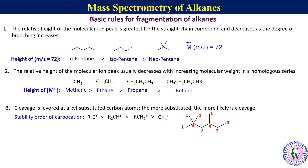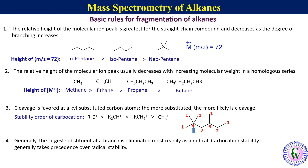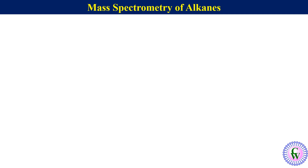Rule number four: generally, the largest substituent at a branch is eliminated most readily as a radical, giving the smallest possible carbocation. Here, carbocation stability generally takes precedence over radical stability. Let's take the example of the fragmentation of 3-methylpentane.